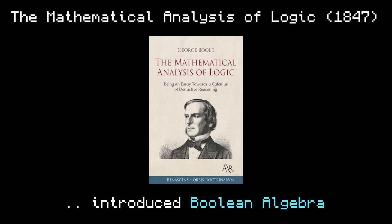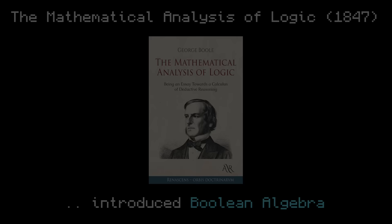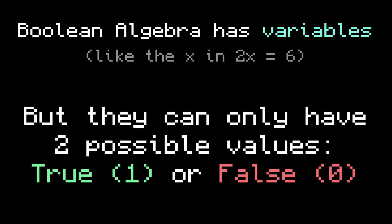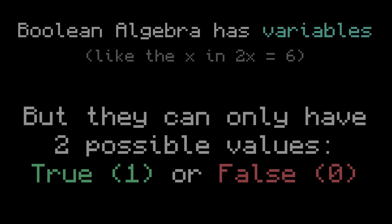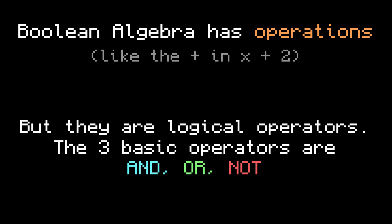Nowadays, Boolean algebra is the foundation behind digital logic, as well as many other applications. So how does it work? Just like normal algebra, Boolean algebra has variables. But instead of taking on any possible value, these variables can only have two values: true or false, one or zero. Boolean algebra also has operations. Similar to addition or multiplication in normal algebra, Boolean algebra has logical operations. The three most basic ones are AND, OR, and NOT. Let's look at these in more detail.